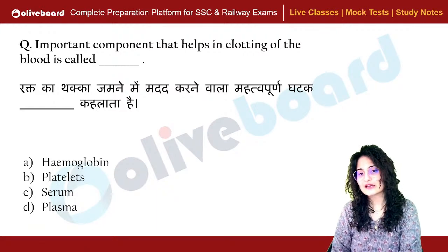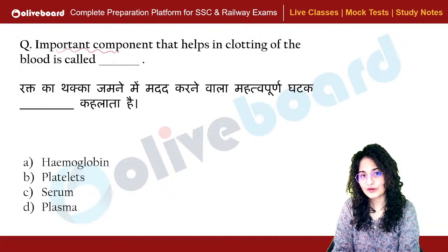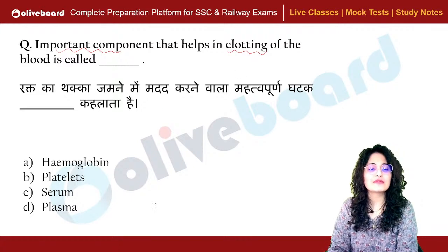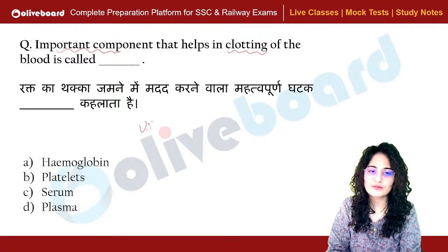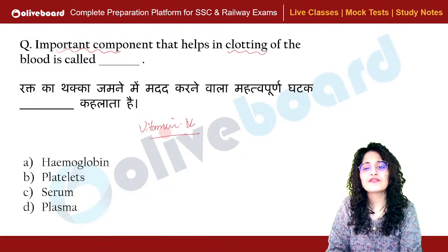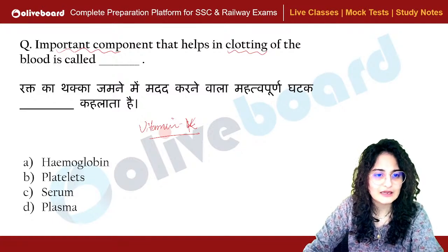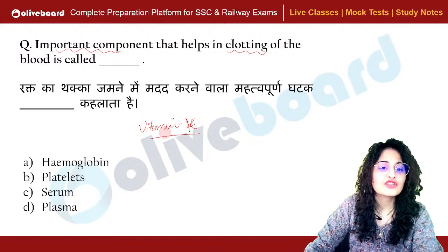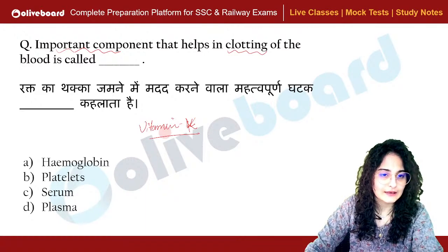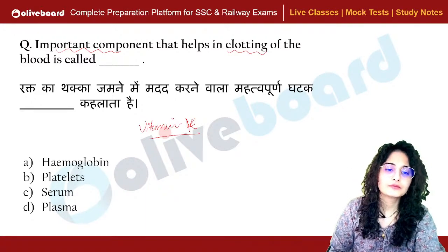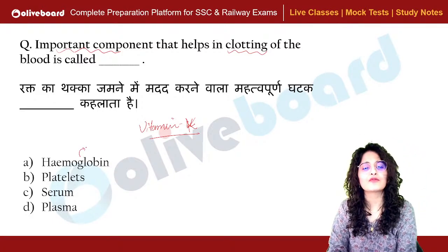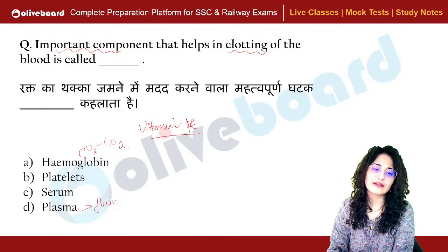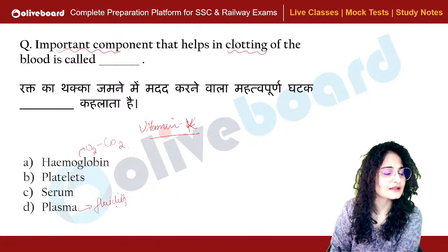The important component that helps in clotting of blood — which part of the blood is responsible? Vitamin K helps produce fibrin and aids clotting. In connective tissue, the component that helps clot blood is platelets. Hemoglobin transports oxygen and carbon dioxide. Plasma provides fluidity to all cells.